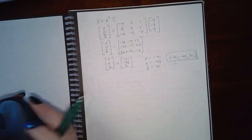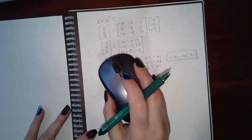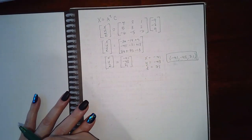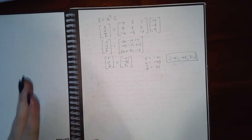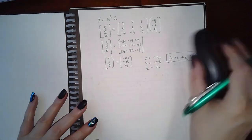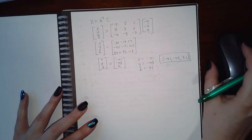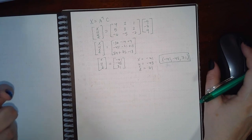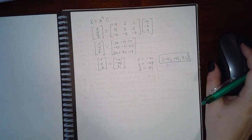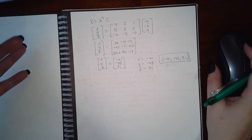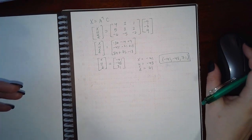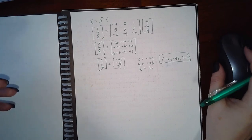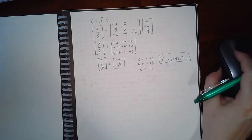Cramer's rule was a lot shorter and easier than this method. Although we have to learn this method, it's not the one I would choose on a final exam. However, these inverses have a bigger impact later — in differential equations and linear algebra, you'll really start to use matrices extensively.